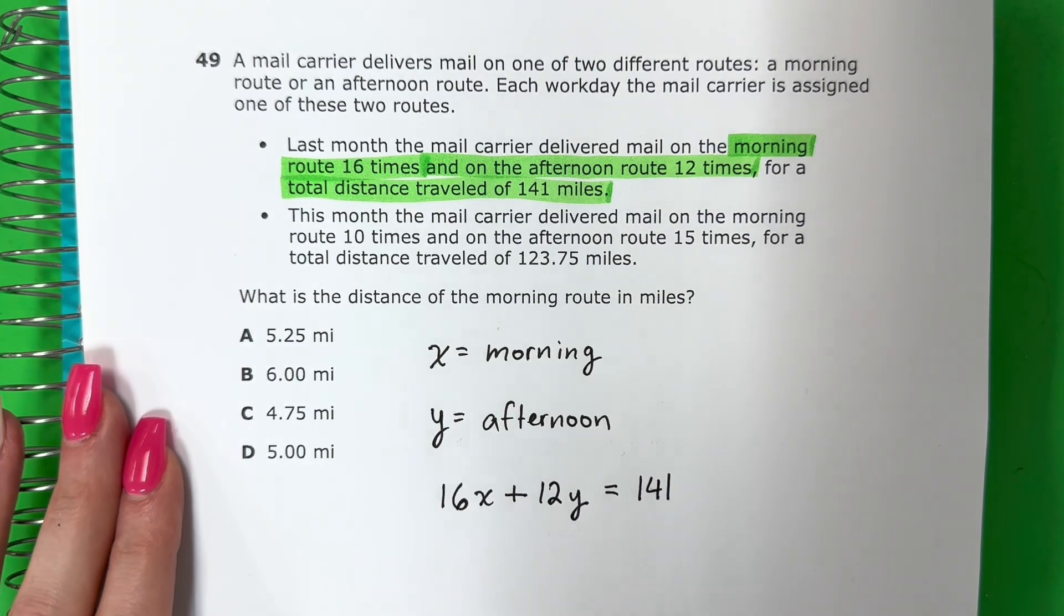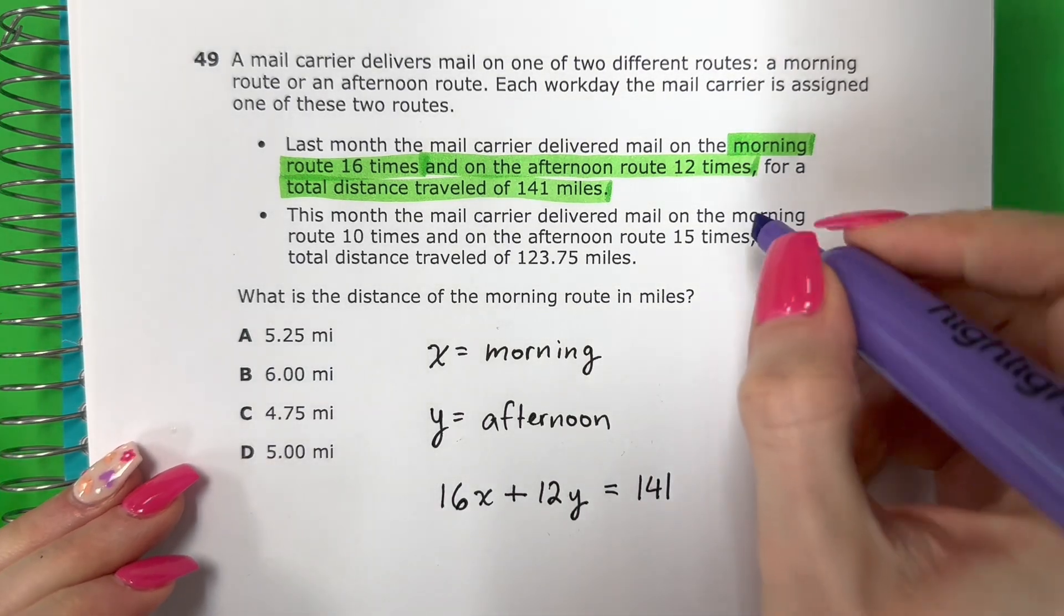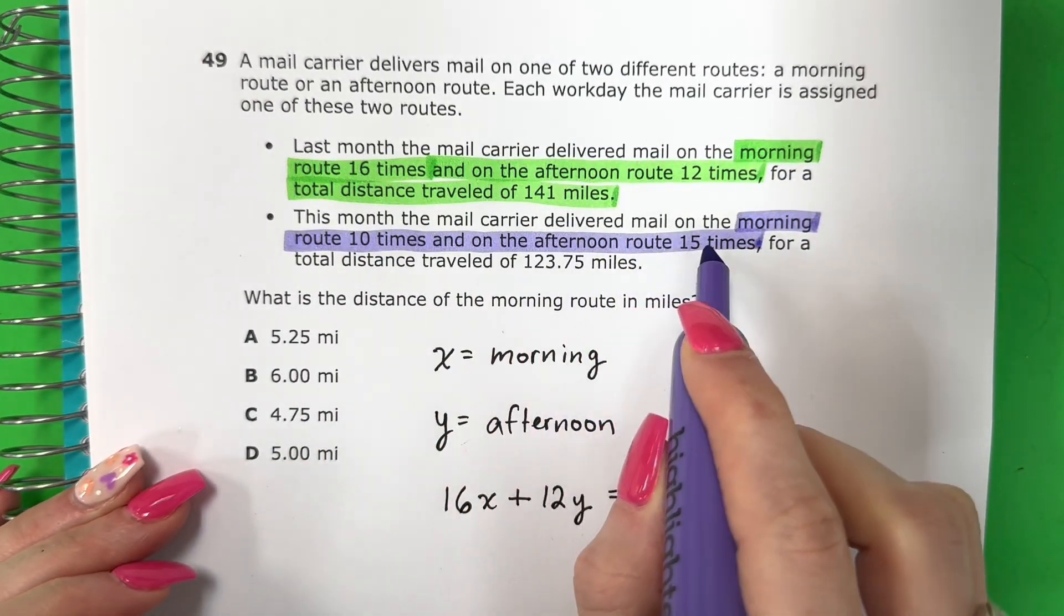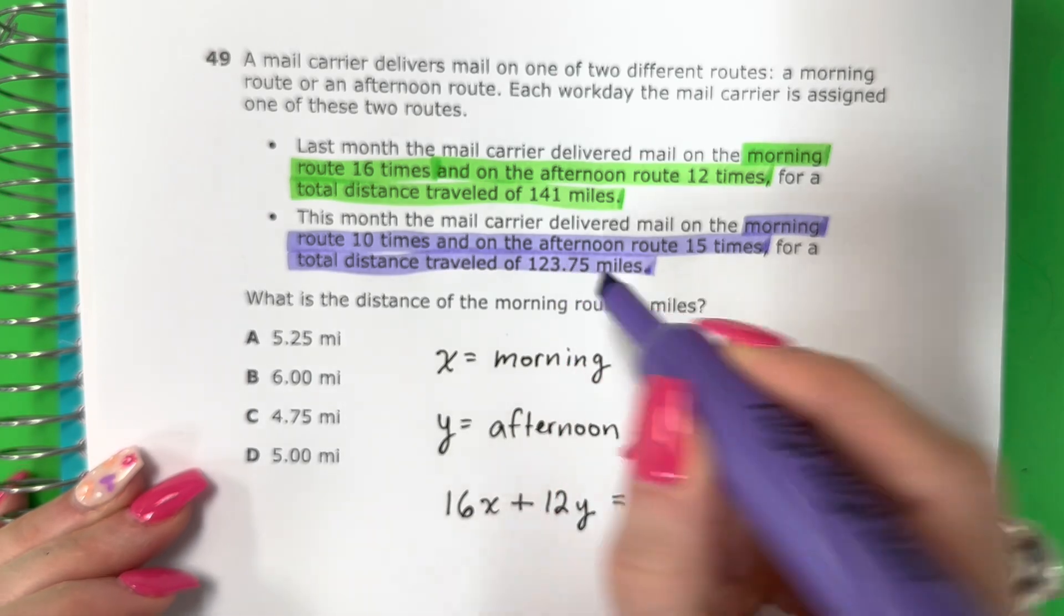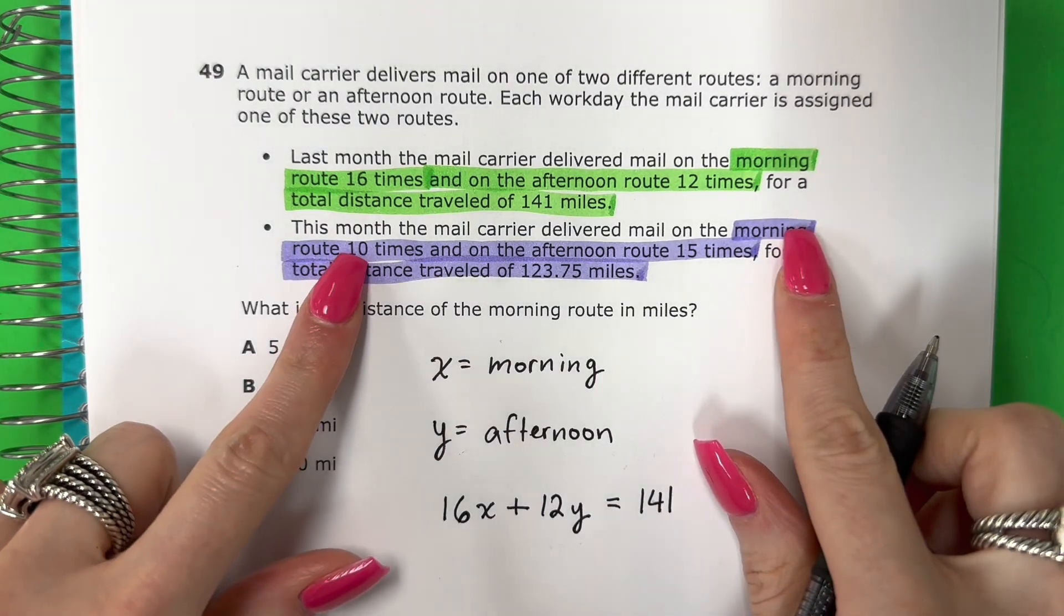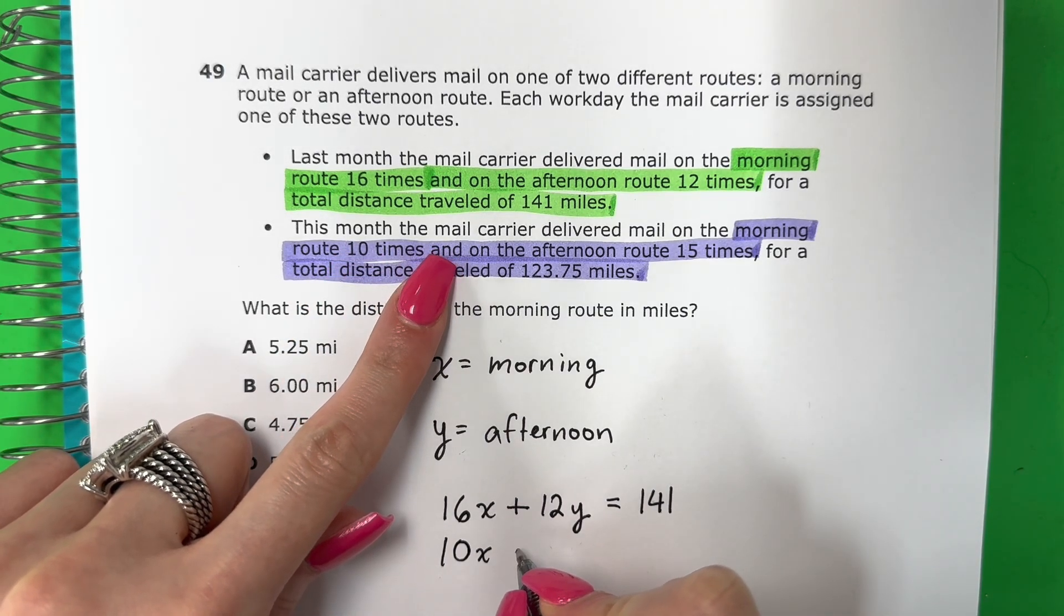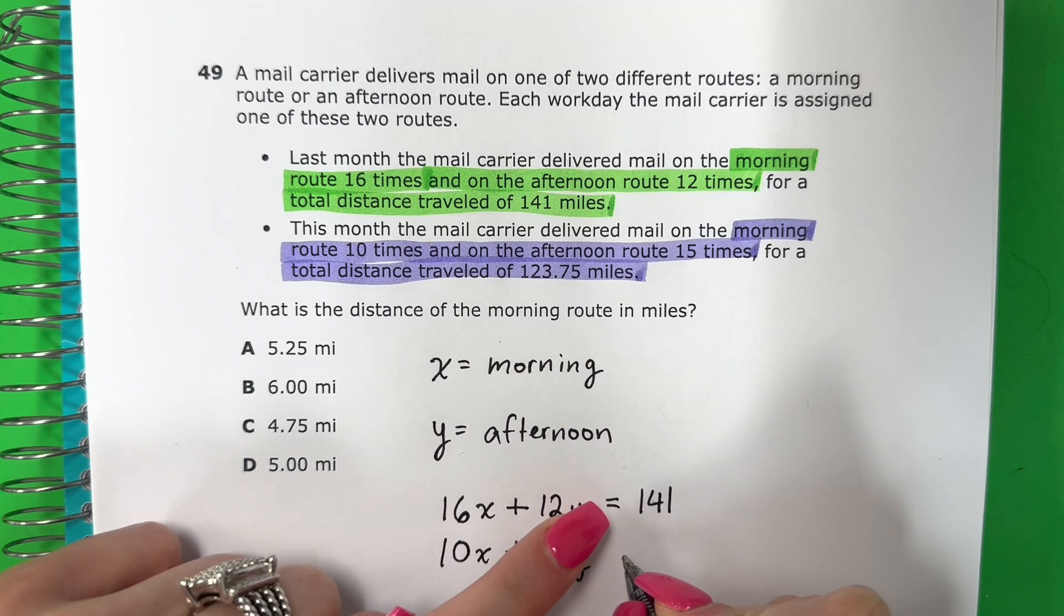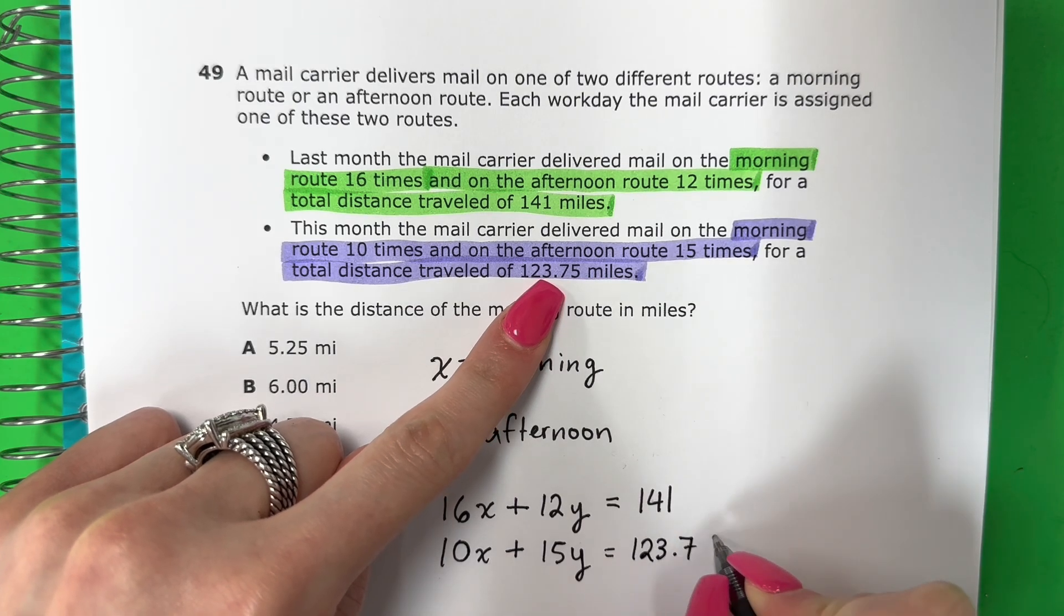Let's do the next one. Ahora la siguiente. So again, otra vez, I have a morning and an afternoon. Tengo una mañana y la tarde. Morning is 10 times. La mañana es 10 veces. And the afternoon is 15 times. Y la tarde es 15 veces. And the total, la total, is 123.75 miles. El total es este. So let's put that in there. So morning is 10. So 10X. Plus, there's more. And Y es más, plus. 15 afternoon, la tarde, Y. Put your equal, el igual, for the total, el total. And this is the total. Y este es el total.